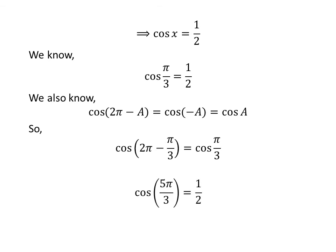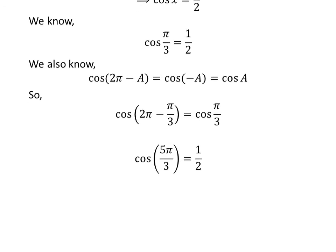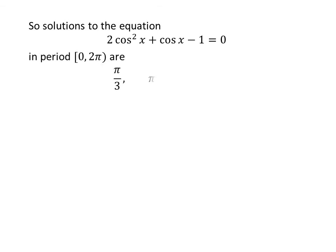Application of the above identity implies that cosine of 2 times pi minus pi upon 3 is equal to cosine of pi upon 3. As 2 times pi minus pi upon 3 is equal to 5 times pi upon 3, so cosine of 5 times pi upon 3 is equal to one half. So the solutions of the equation 2 times square of cosine of x plus cosine of x minus 1 is equal to 0 in the interval 0 to 2 times pi are pi upon 3, pi, and 5 times pi upon 3.